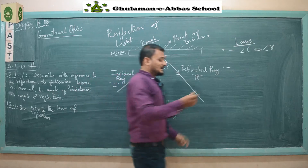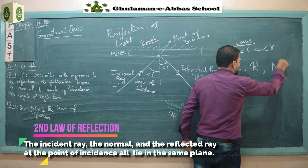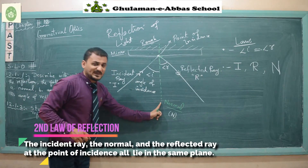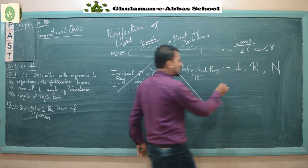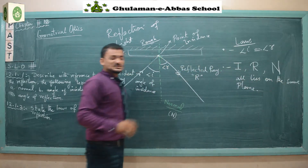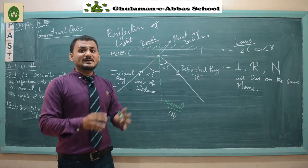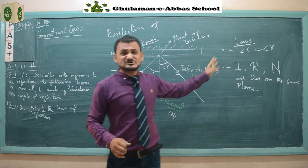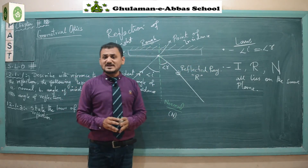The second law of reflection states that the incident ray, the reflected ray, and the normal all lie on the same plane. So these three — the incident ray, the reflected ray, and the normal — always lie on the same plane. To summarize: Law 1: angle of incidence equals angle of reflection. Law 2: the incident ray, reflected ray, and normal all lie on the same plane.